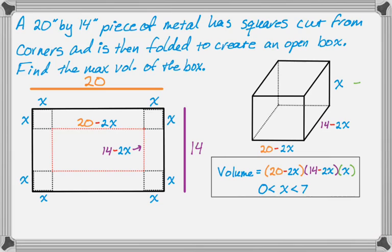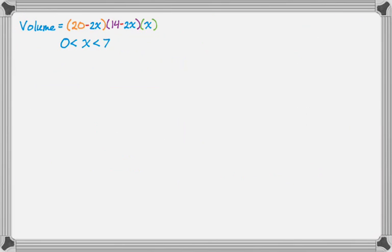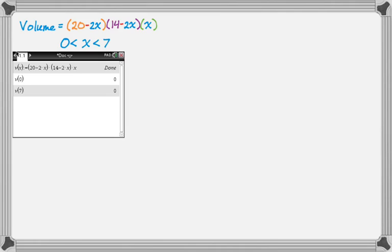So that's our volume formula. And now what we do is we basically turn on our calculator. So since I'm handwriting this video, I've got some screenshots of what I did. So first thing I did was I stored the function. So I did v of x, and then I did colon equals, and I did 20 minus 2x times 14 minus 2x, and then times x. And then I punched in v of 0 and v of 7 just to kind of confirm that it was working the way I thought it was. And I get a 0 volume for both of those, which makes sense, because if you make a cut of 0 or a cut of 7, you're essentially causing one of the dimensions to be 0.